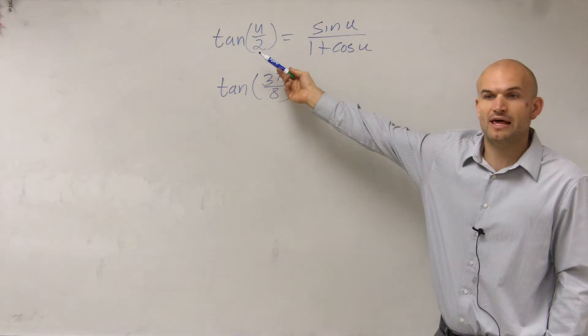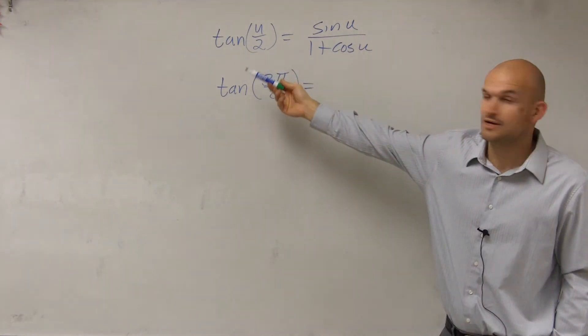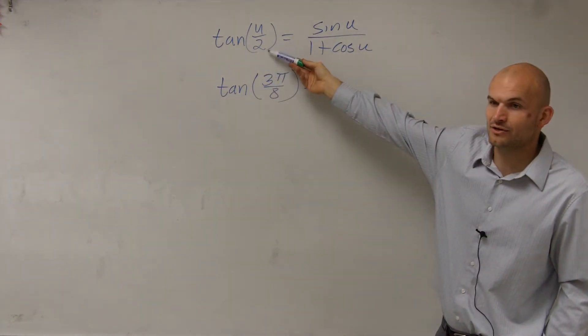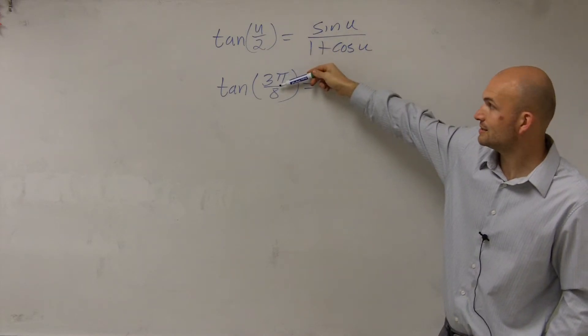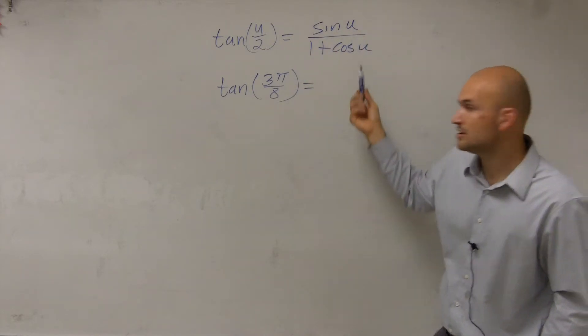So going back again, what we want to evaluate for the tangent of the half angle. So if tangent of the half angle, if u divided by 2, is equal to 3 pi over 8, then what is u going to be?